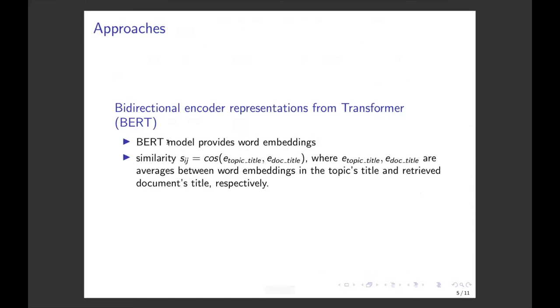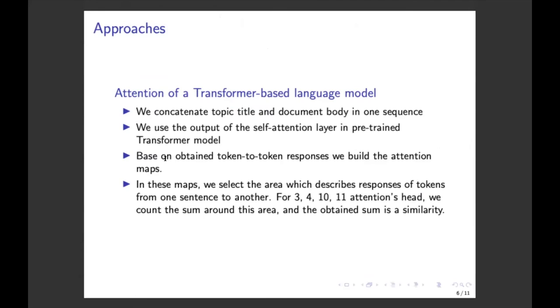The next approach is the bidirectional encoder representations from transformers, BERT. BERT model provides word embeddings. We take embeddings for every word in topic title and document title. For topic title and document title, we count the average between all obtained representations, and our similarity score is the cosine similarity between these vectors, between these representations.